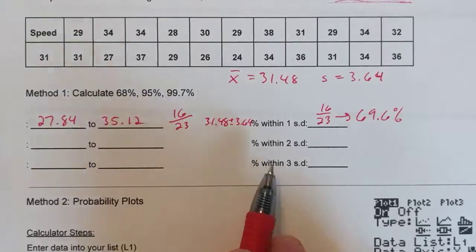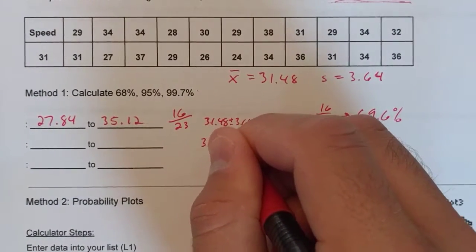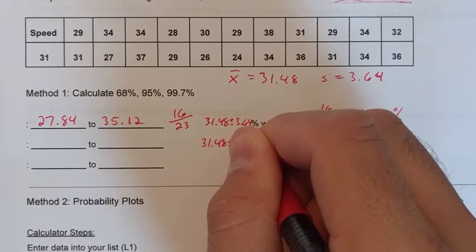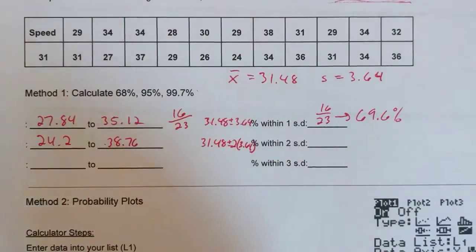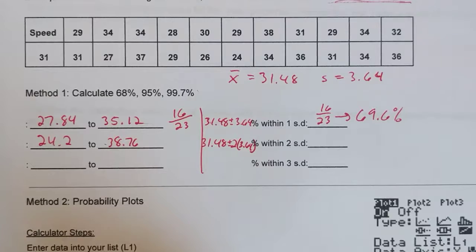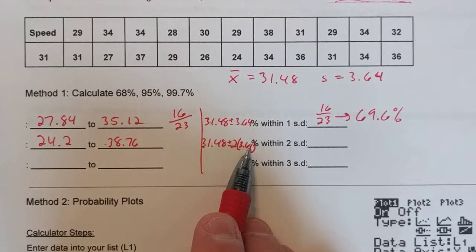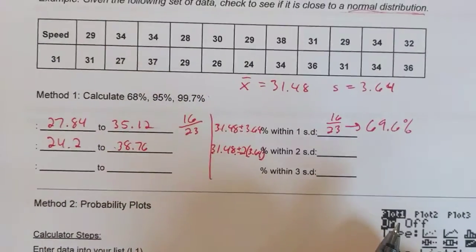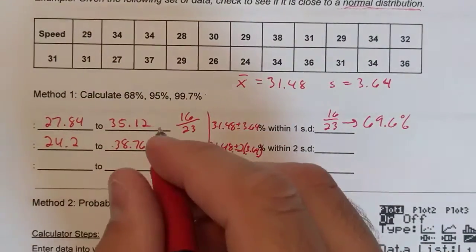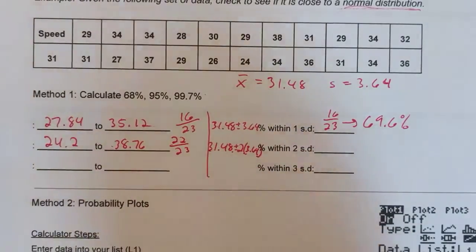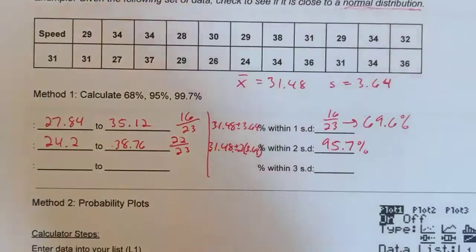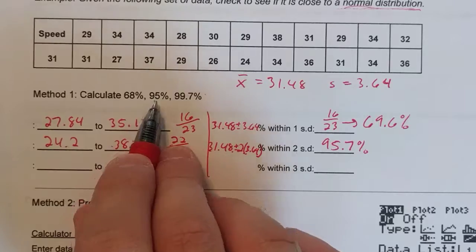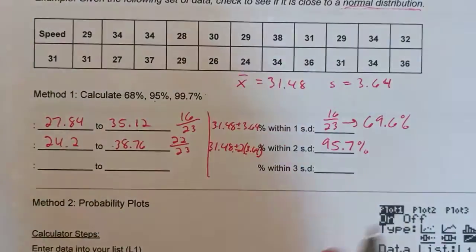Let's do two and three standard deviations. So now we're going to do 31.48 plus or minus two times the standard deviation of 3.64. That window is going to be 24.2 to 38.76. So 31.48 plus 2 times 3.64 and then minus 2 times 3.64 will give you this window. The number of data values that fall between these two numbers is 22 out of the 23 data points. There's only one that doesn't. That's a percentage of 95.7 percent. If you look at your percentages, 95 to 95.7 percent, it's even closer than the first percentage.